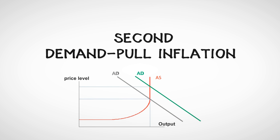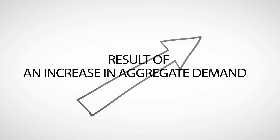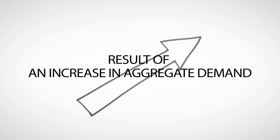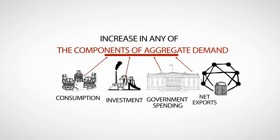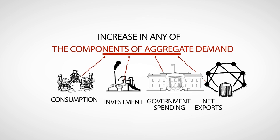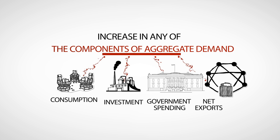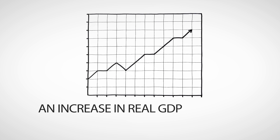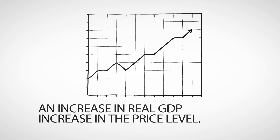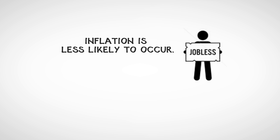Second is demand pull inflation. Demand pull inflation is the result of an increase in aggregate demand. Generally, an increase in any of the components of aggregate demand — consumption, investment, government spending, or net exports — will result in an increase in real GDP and a corresponding increase in the price level. However, if there is significant spare capacity within the economy, inflation is less likely to occur.